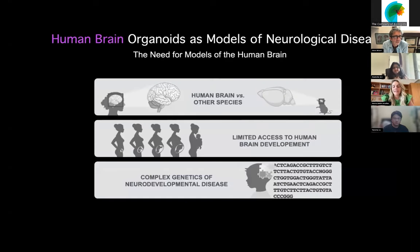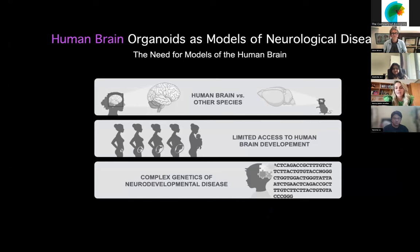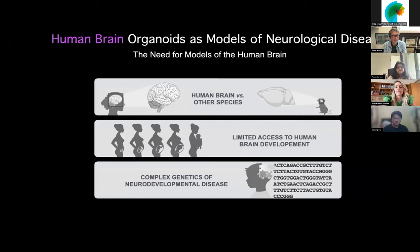I don't think I need to explain too much to this audience why we really need these tractable systems. As you can see in this drawing, our brains are extremely different from other animal models — not only in the structure, but also in the cell types, the circuits, the morphology, and many other features. So we really need these models to move forward toward understanding the specification of the human brain.